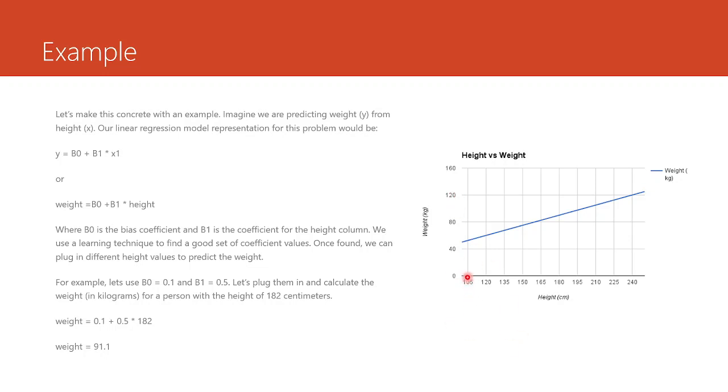You can see when the height is 105, the weight is about 40, 50 something. Then the height is 120, the weight is about 60. Then height is 135, the weight is about 65 or 70. So this is the case. This line is our linear regression line.